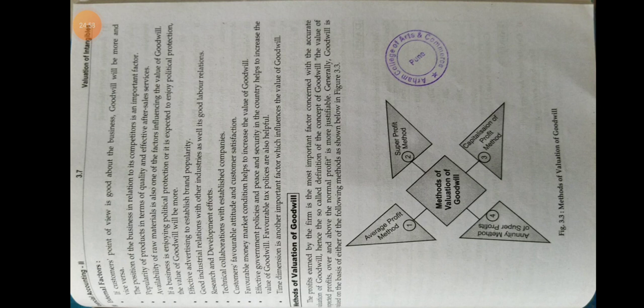If the weighted average profit is taken for the last 4 years, the last year should be given the highest weightage, the previous year a weightage of 3, the year prior to that a weightage of 2, and so on. To obtain the weighted average profit, the profit of each year must be multiplied by its weightage and the grand total divided by the aggregate number of weightages. Since goodwill figures rely on a series of estimates and assumptions, different weightings would produce different end results.